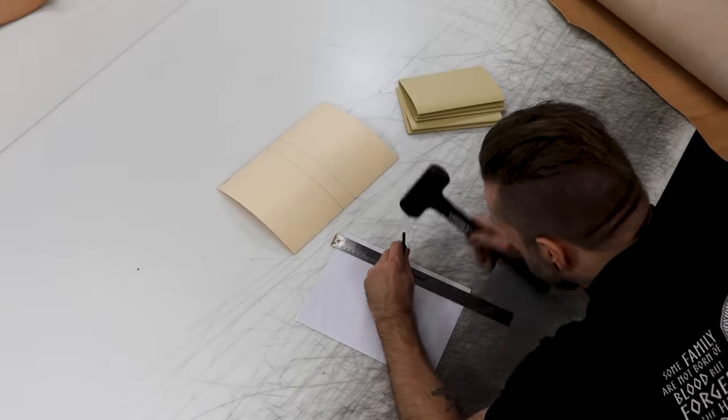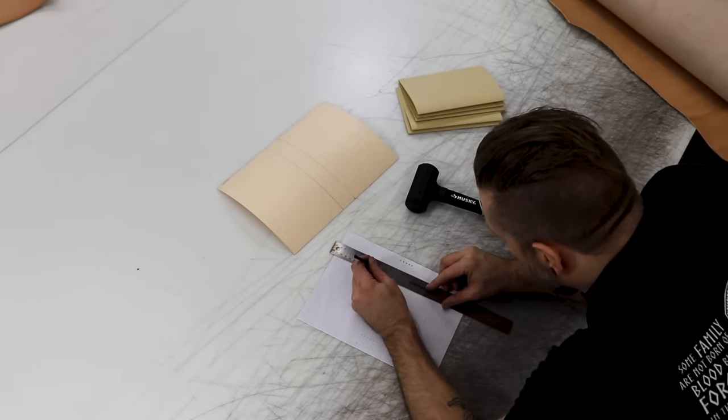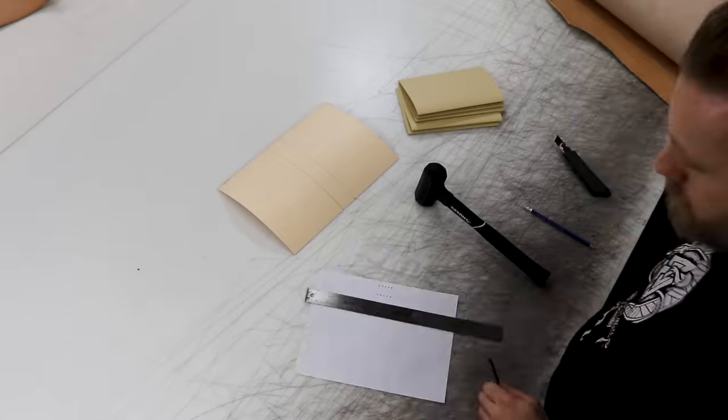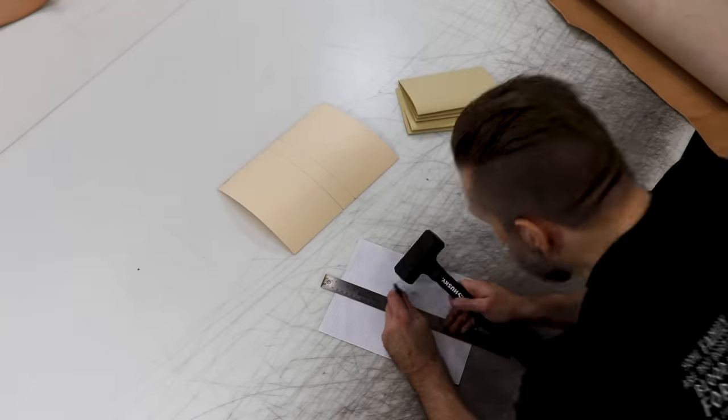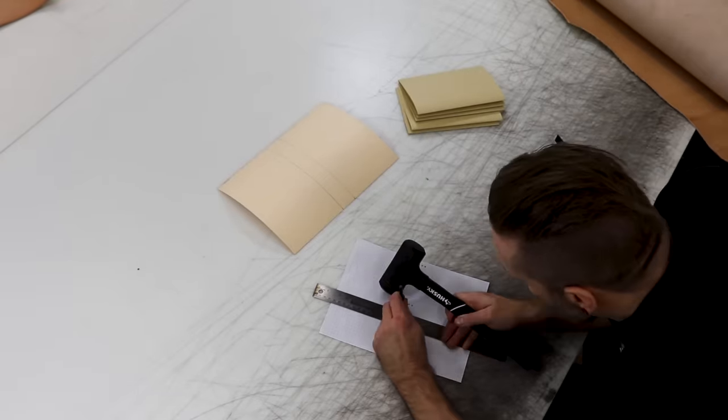So this is just making our pattern that'll help us put the pattern on the cover and the pattern on the pages. Just punch all your holes, and then what we're gonna do is transfer one line of those holes to the pages and then all of those holes to the cover pattern.